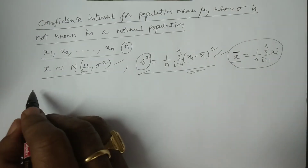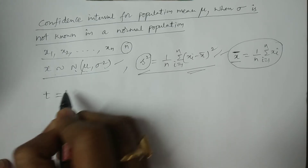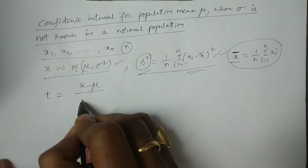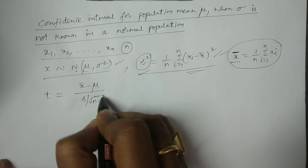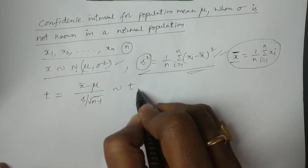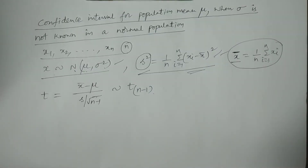By the definition of the T statistic, T = (X̄ − μ) / (S / √(n−1)). This T follows a T distribution with n−1 degrees of freedom. Because for every T statistic, it follows a T distribution with certain degrees of freedom.